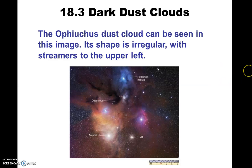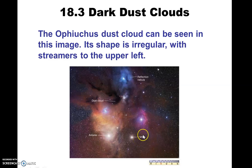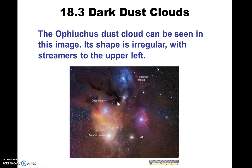Here's one called the Ophiuchus dust cloud, in that particular constellation. There's a very bright star — Antares. There's also M4, the fourth Messier object Charles Messier found. Notice there's a dark nebula right here, and a reflection nebula. This is actually a great image because you're seeing an emission nebula, a reflection nebula, and a dark nebula all in the same picture — all in the same region of the sky. Ophiuchus is near the constellation Scorpio.